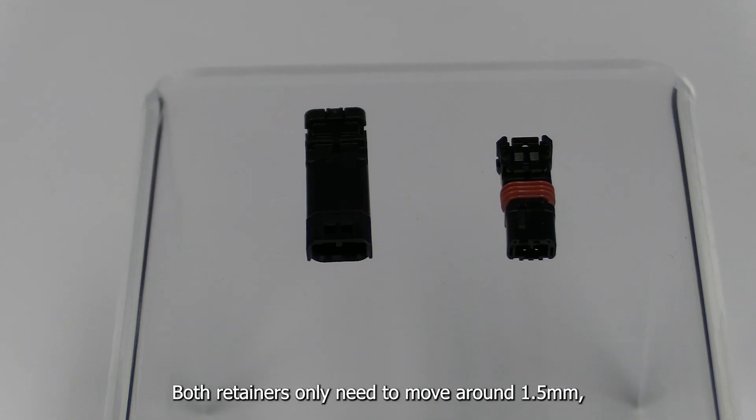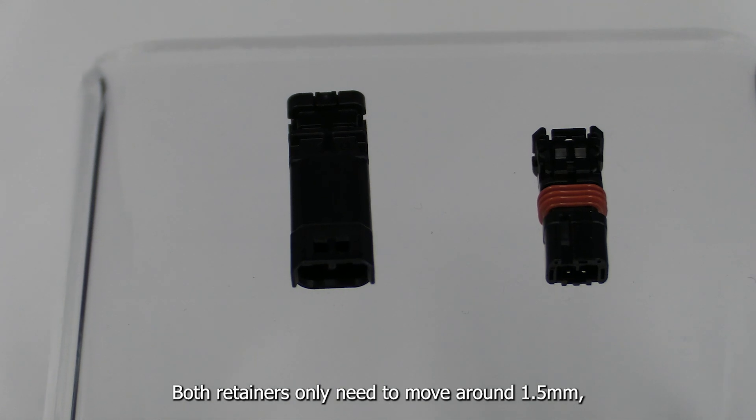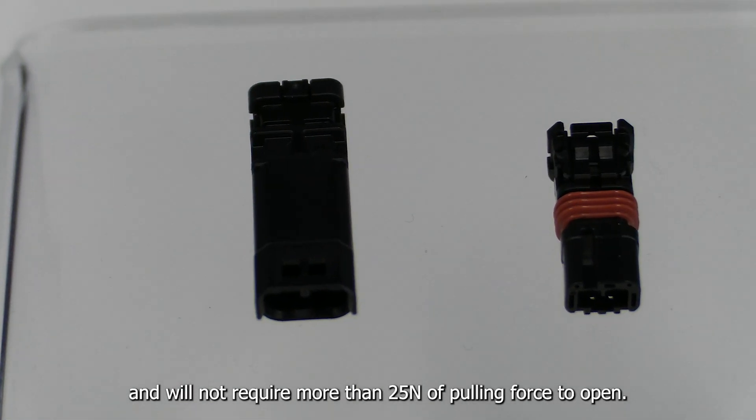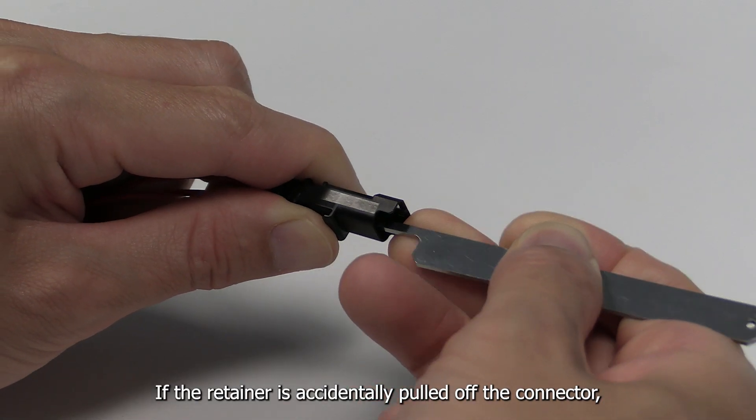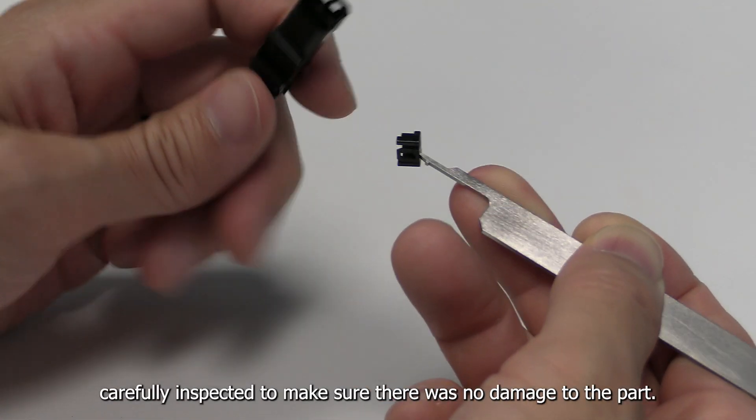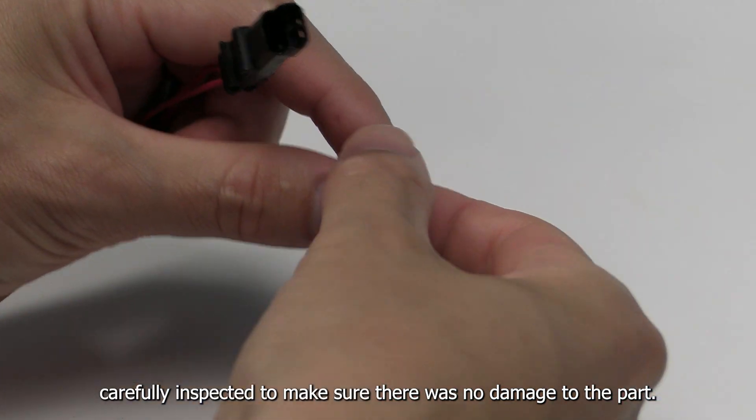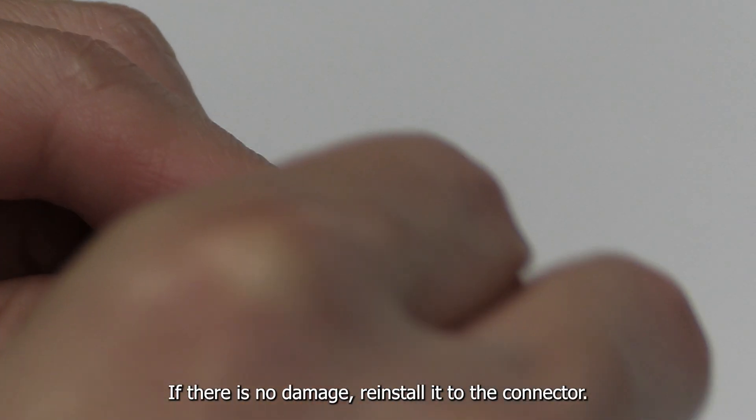Both retainers only need to move around 1.5 mm and will not require more than 25 newtons of pulling force to open. If the retainer is accidentally pulled off the connector, carefully inspect it to make sure there was no damage to the part. If there is no damage, reinstall it to the connector.